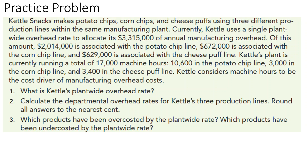Kettle's plant is currently running a total of 17,000 machine hours: 10,600 in the potato chip line, 3,000 in the corn chip line, and 3,400 in the cheese puff line. Kettle considers machine hours to be the cost driver of manufacturing overhead costs.